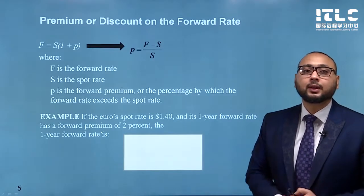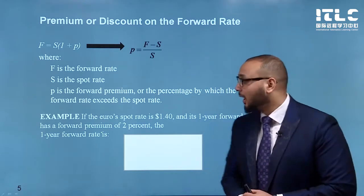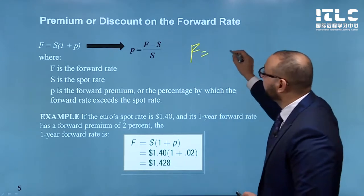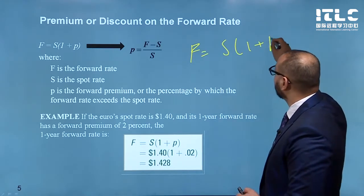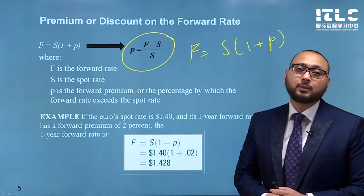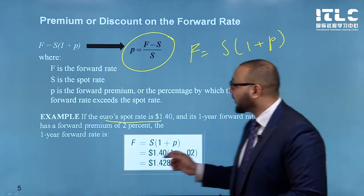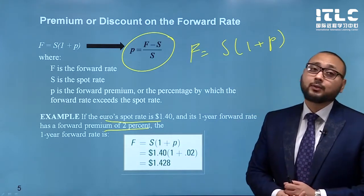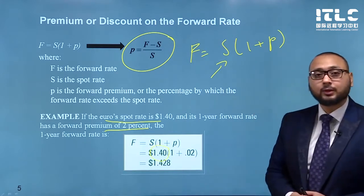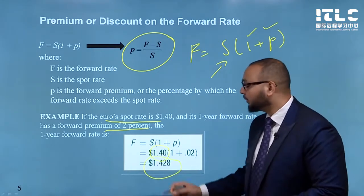We already know from our previous discussions how to calculate premium or discounts on forward rates. The forward rate is equal to spot multiplied by 1 plus premium. If we rearrange this equation, we get: forward minus spot divided by spot equals the premium. For example, if the euro spot rate is 1.40 dollars and the one-year forward rate is at a premium of 2%, then the forward rate is 1.40 × 1.02, which equals 1.428.